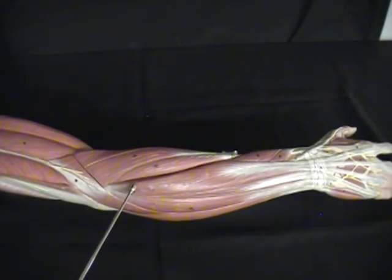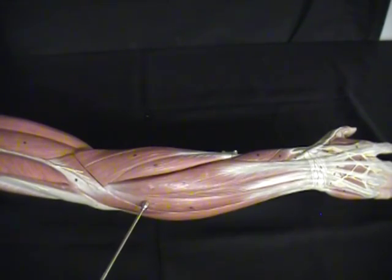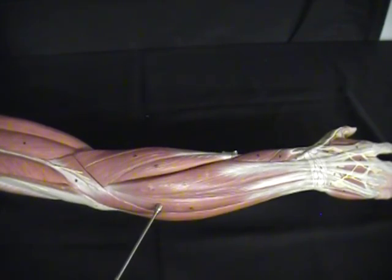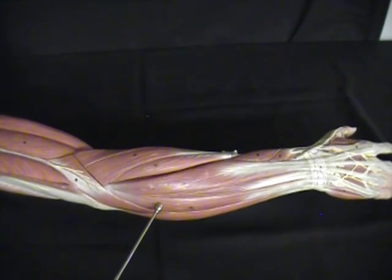Now, again keeping in mind our extensor digitorum, follow it again all the way back and always start at the bottom for our landmark. Right next to that on the ulnar side, we have our extensor carpi ulnaris.